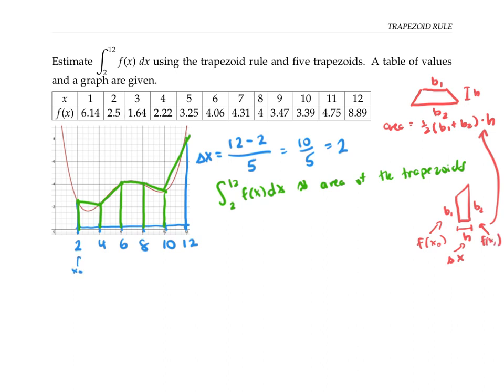So, if I call these numbers X0, X1, all the way through X5, since there are five trapezoids, then the area of trapezoid 1 is given by delta X times one half F of X0 plus F of X1. And the area of trapezoid 2 is given by delta X times one half F of X1 plus F of X2. I can write a similar formula for each of my five trapezoids.